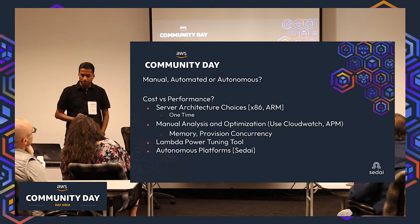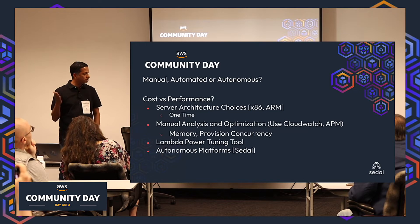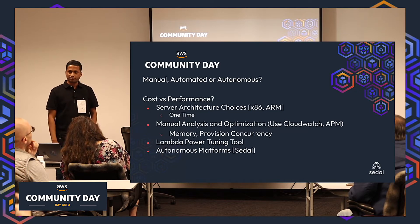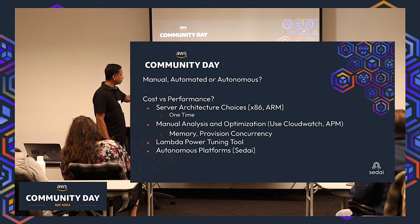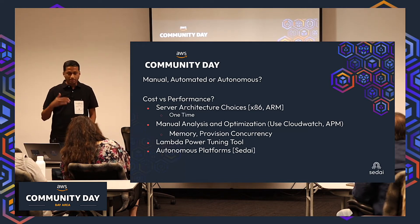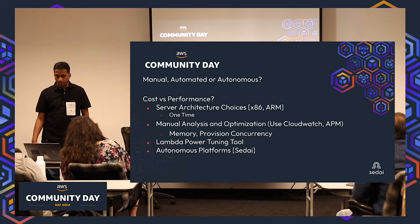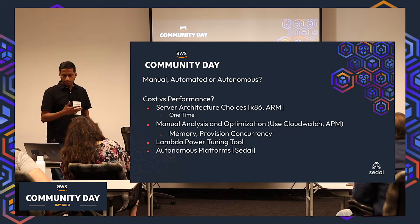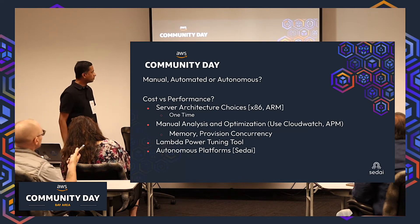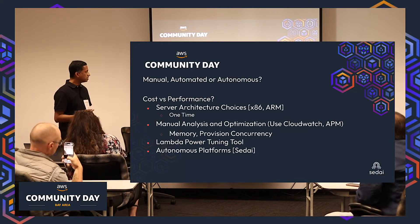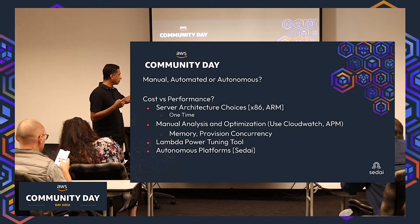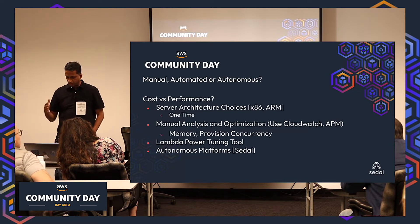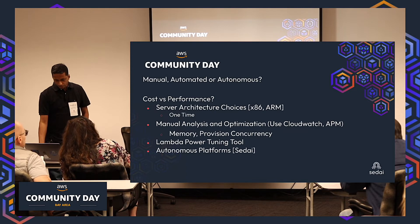Now let's look at solution options. In Amazon, you have several approaches: choosing the right processor architecture (ARM vs. x86), manual analysis and optimization using dashboards, writing point automation on top of monitoring tools, using the open-source Lambda Power Tuning tool from AWS, or using an autonomous platform like Sedai.